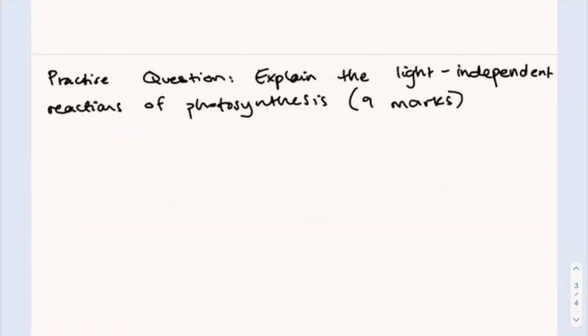To finish up, let's take a look at a past exam paper question. Explain the light independent reactions of photosynthesis for nine marks. So we have to say nine of the following.